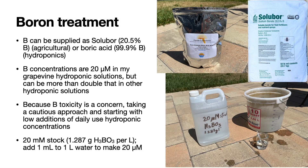How do we treat for boron deficiency? There are two materials that are commonly used. One is called Solubor, which is basically about 20% borate with some sodium borate materials added. The other is boric acid, which is what I use in my hydroponic solutions — this is 100% boric acid. Both are readily soluble in solution. Boron can be added as a soil drench or as a foliar spray. I prefer the soil drench, as there's some risk of causing boron toxicity with a foliar spray if not sprayed properly.